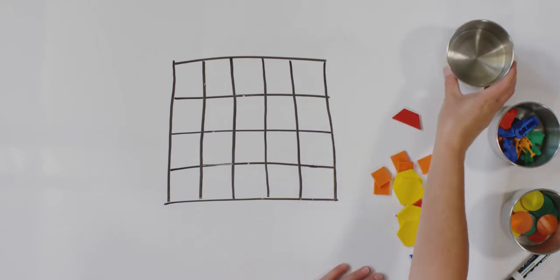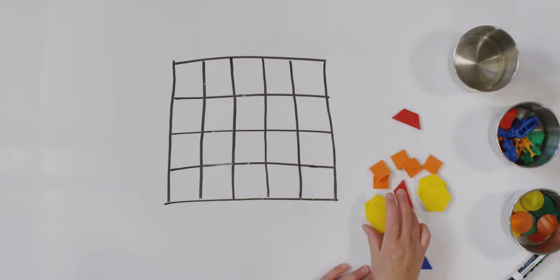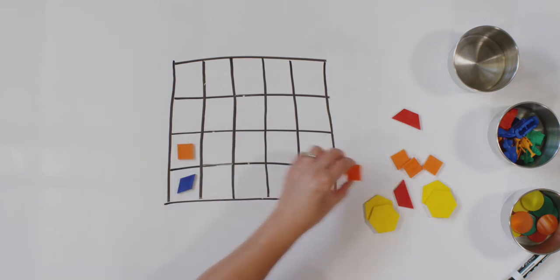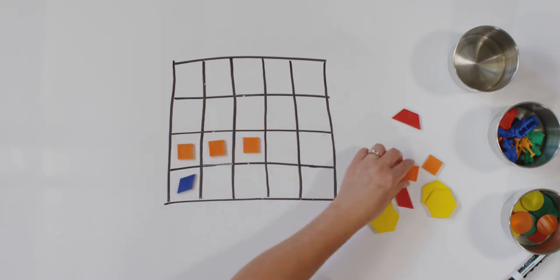Now, are you ready to graph along with me? Let's grab our pattern blocks and we'll graph those first. Spill them out and take a look. I see yellows and reds and blues and oranges. Let's start with the blue. Remember, we're going to start graphing from left to right. So I'm going to put my blue in the first square. I don't have any more, so let's start with our oranges next. I'm going to start from my left to right and put one orange in each square.